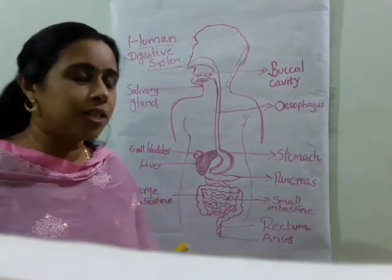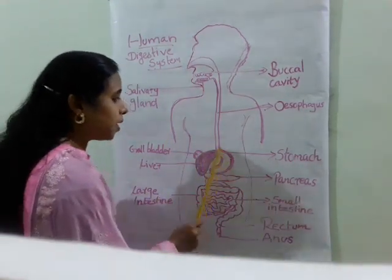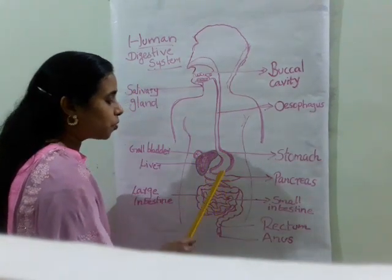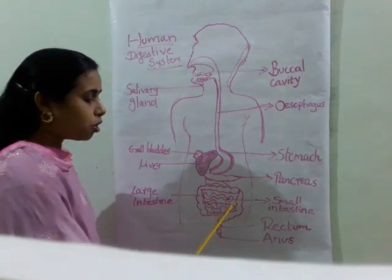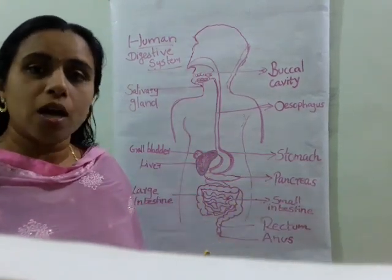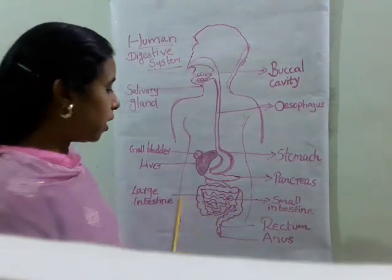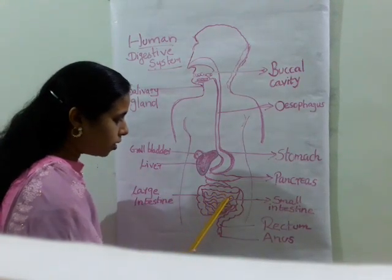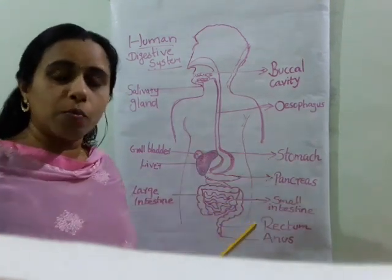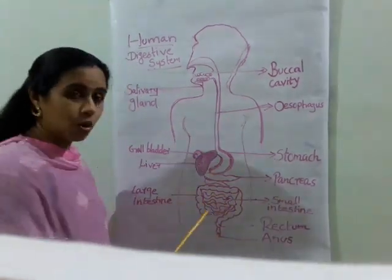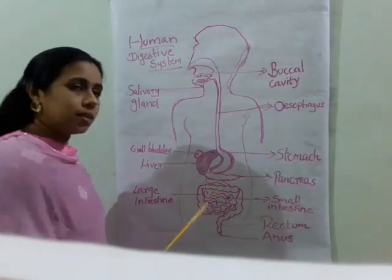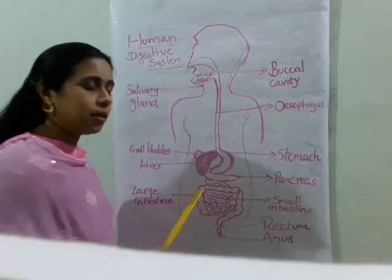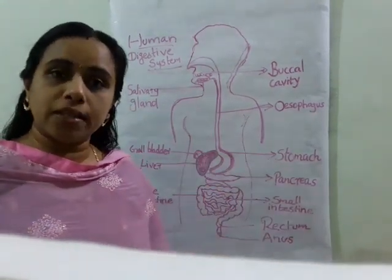After partial digestion in the stomach, food particles are transferred into the small intestine. The small intestine is a coil-like structure — almost 7.5 meters long. This is the place where complete digestion takes place.